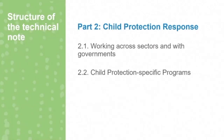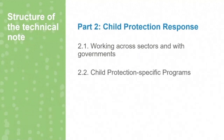Part two of the technical note talks about what we can do — the response. We divided it into two subsections: 2.1 talks about how to work with other sectors and with governments, because governments are at the center of the response, along with health, nutrition, and water and sanitation, to ensure a holistic approach to addressing and preventing child protection issues. Subsection 2.2 looks at child protection-specific programs, based on the minimum standards for child protection in humanitarian action.